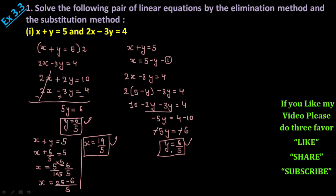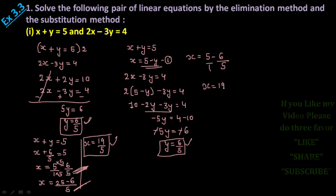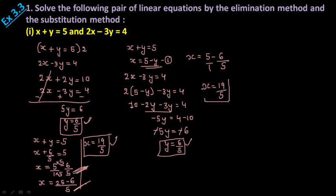Now if you keep this value of y back into x = 5 - y, you put in 6/5. You again need to find out the LCM, and the same calculation applies: x = (25 - 6)/5 = 19/5. So by both methods you get the same answer.